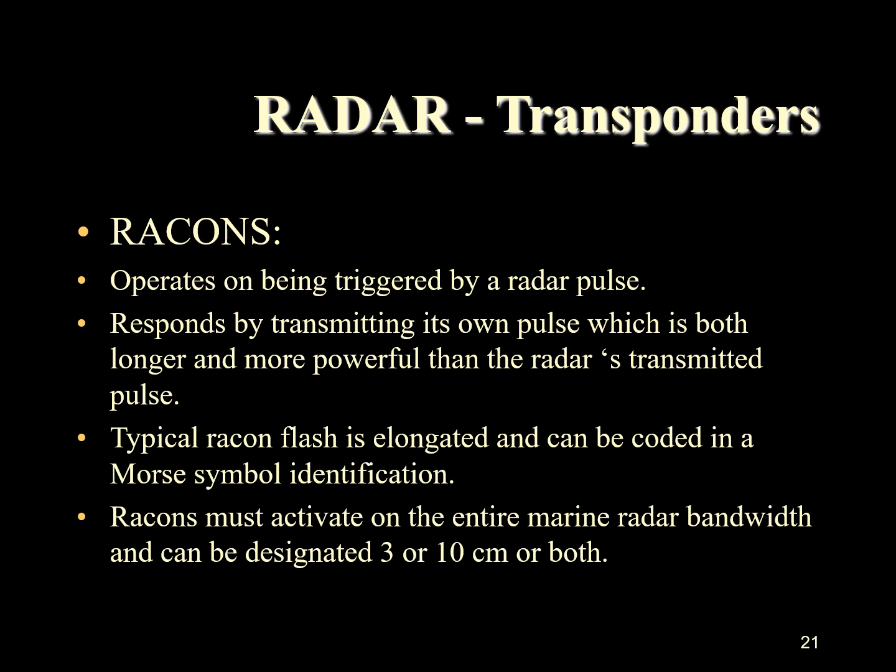The typical RACON flash is elongated and can be coded with Morse identification signals. RACONs must activate on the entire marine radar bandwidth and can be designated 3 cm or 10 cm or both. The RACON will search through the bandwidth using a slow sweep pattern which takes about 2 minutes, thus responding to your radar signal for only a short period of time — about 20 seconds every 2 minutes. The RACON will actually show up on the radar screen when the equipment is not correctly tuned, so it should never be used as a tuning indicator.